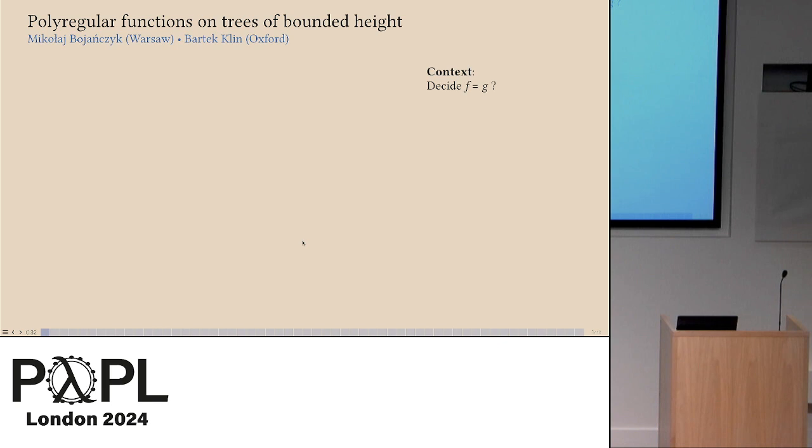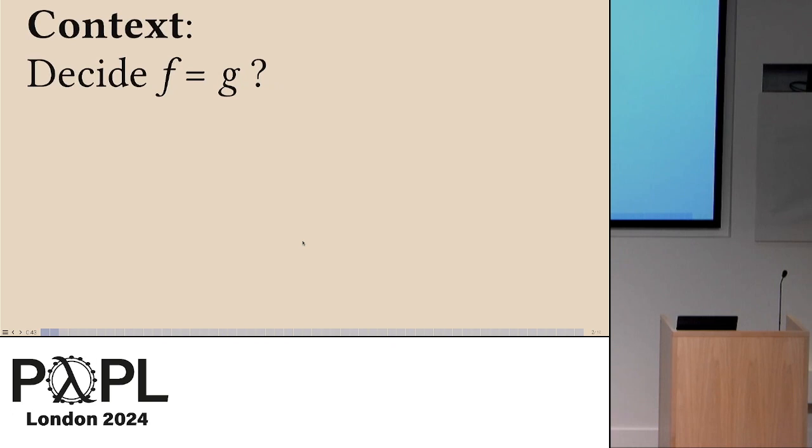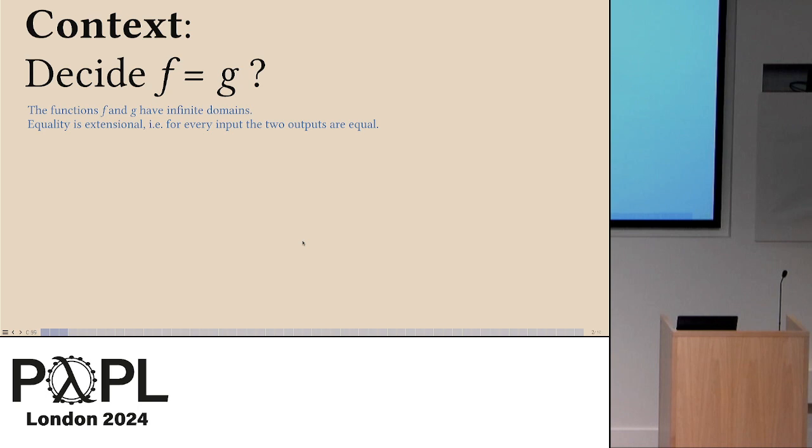I'll begin with some context. The title sounds a bit technical and down the tree, and the context is probably as general as you can get in a theoretical computer science conference, which is deciding if two functions are equal. Suppose somebody gives you two functions and you want to know if they're equal, and it's meant to be a non-trivial problem as far as decidability is concerned.